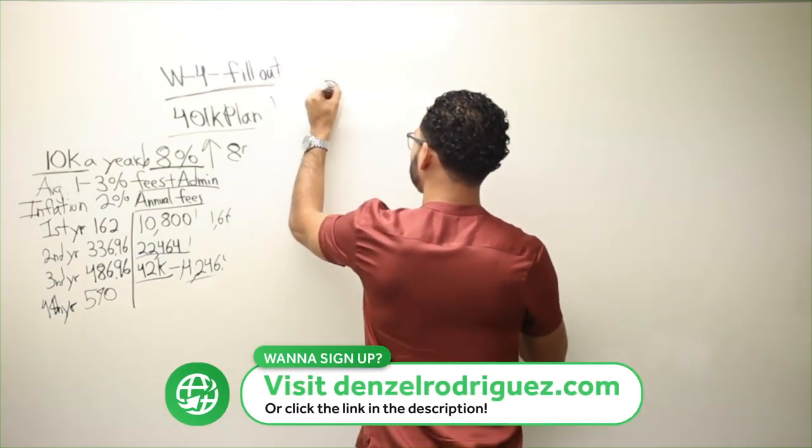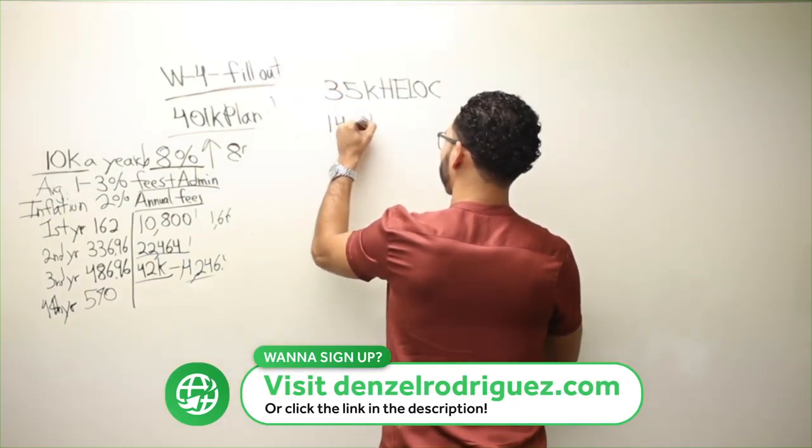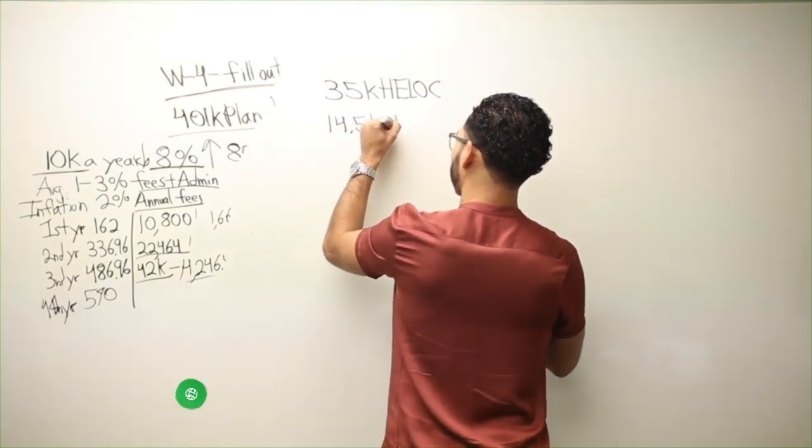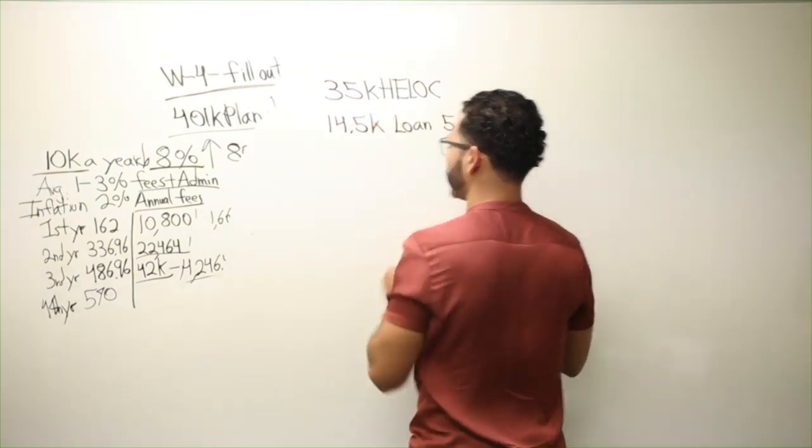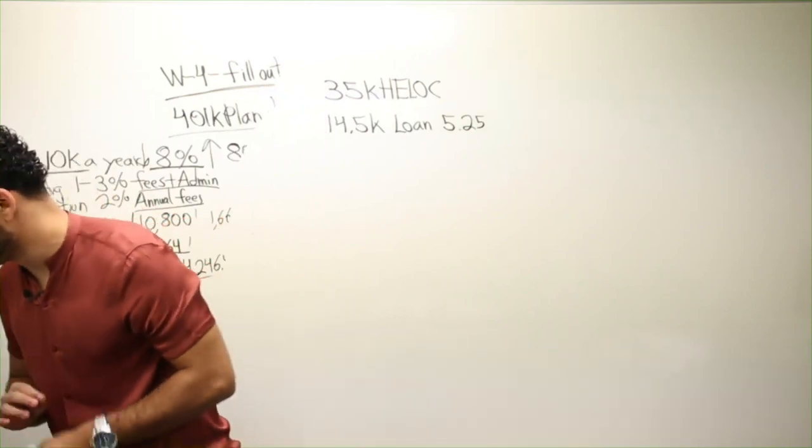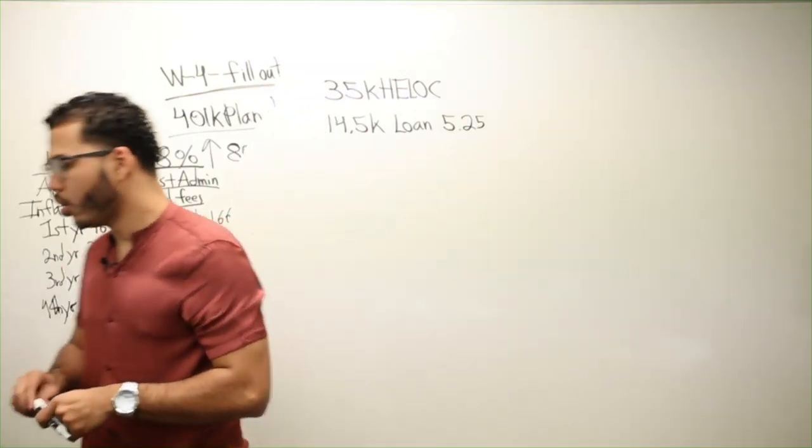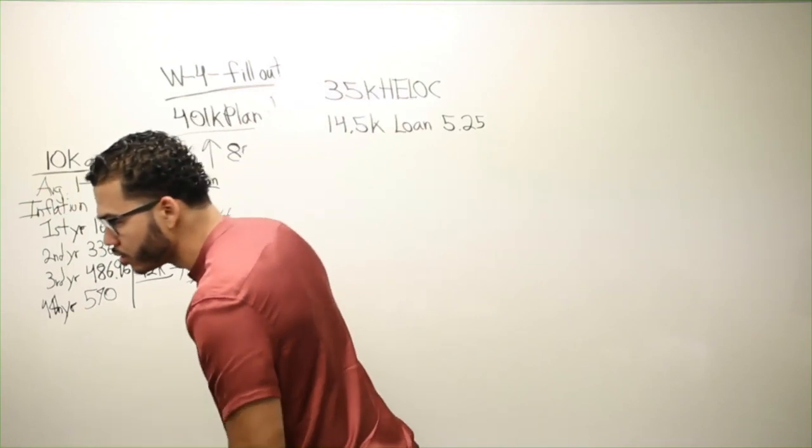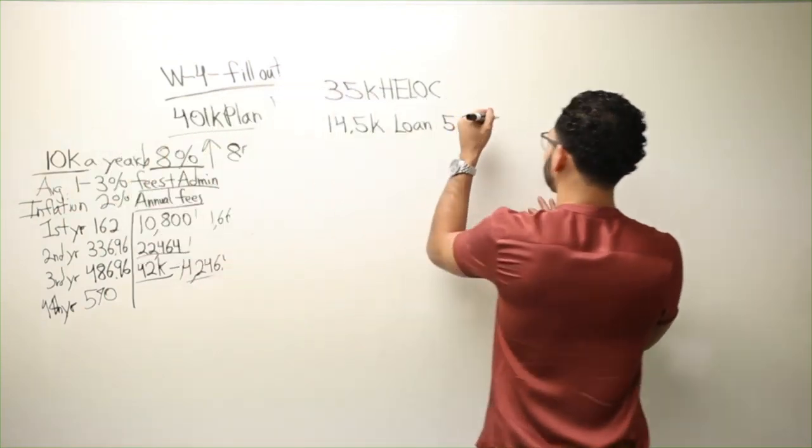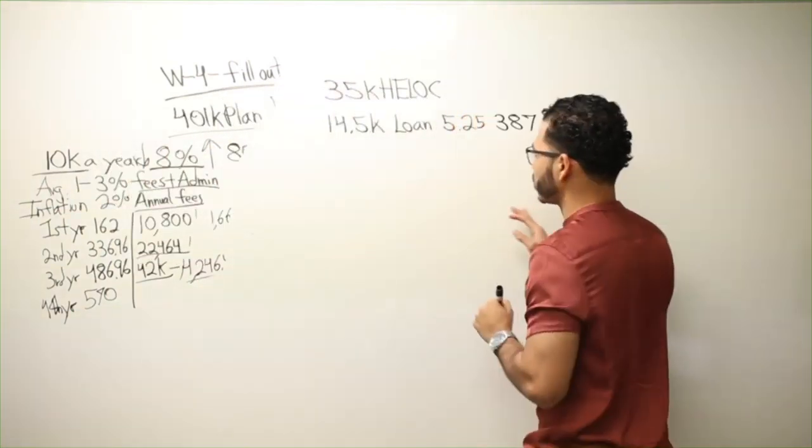35k HELOC, 14.5k loan, 5.25%. Did he display the payment? Oh, loan is loan. Put that together. So, $387, gotcha.